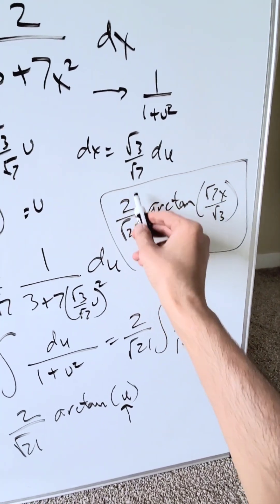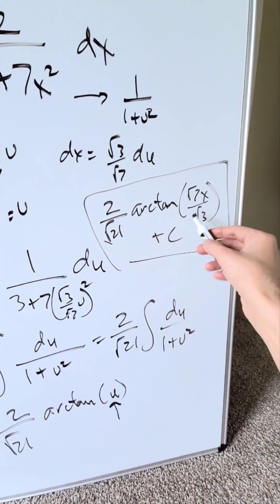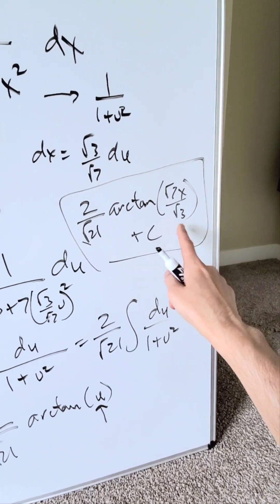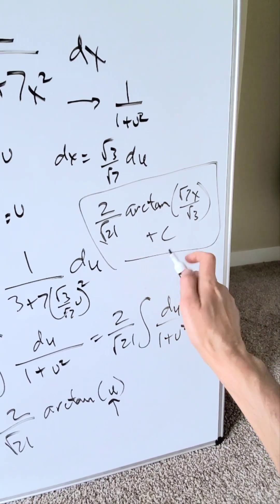This right here should be our answer: 2 divided by root 21, arctan parentheses root 7x over root 3, close parentheses, plus c. It should be a correct answer.